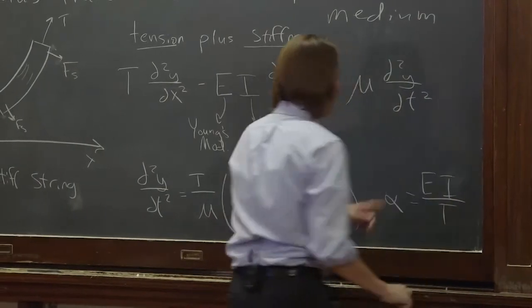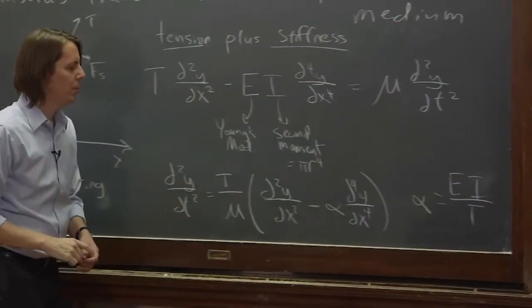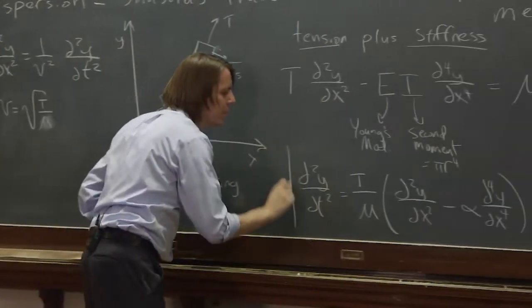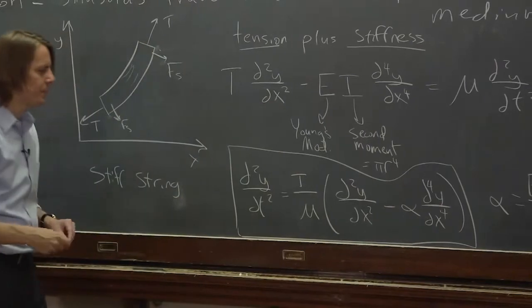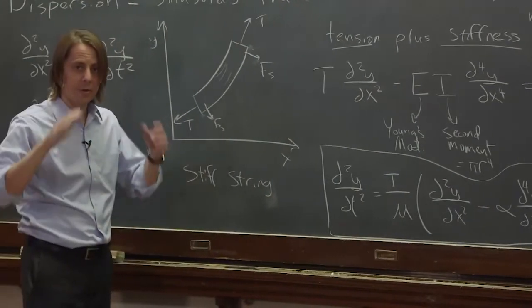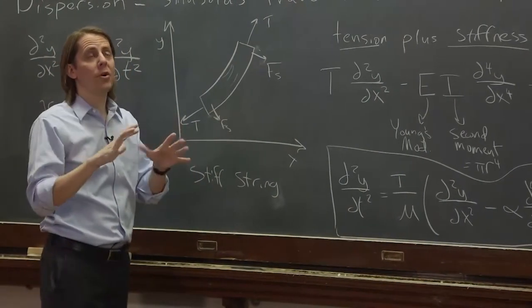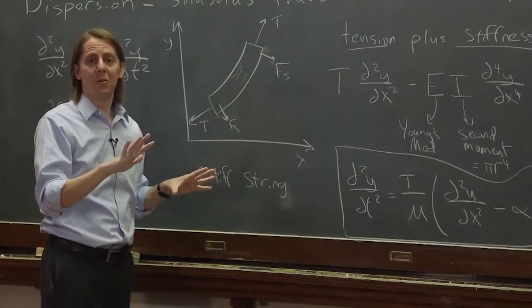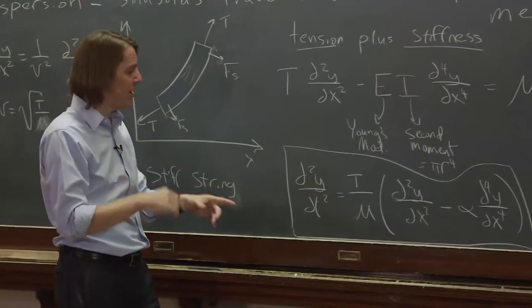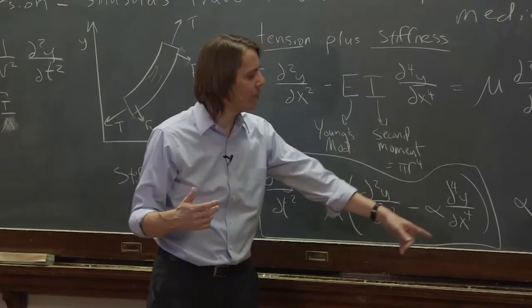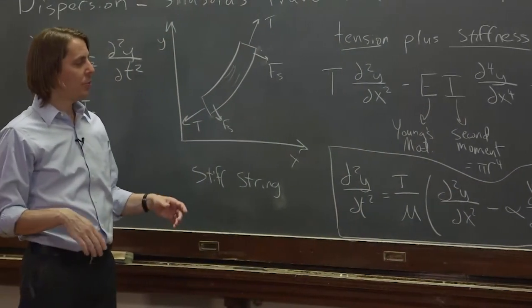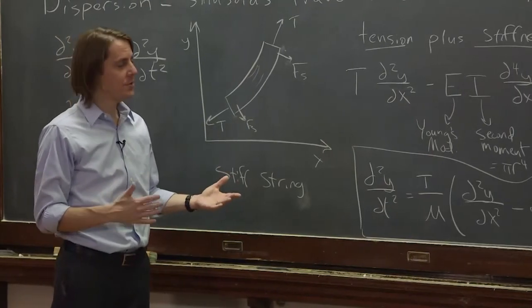EI, Young's modulus, second moment over tension. So here is our stiff string wave equation. It's still linear. So it's linear as long as all the derivatives are to the first power. So that's d²y/dt², first power, first power, first power, even though it's a fourth order derivative. So it's not that it's non-linear. It's just different.